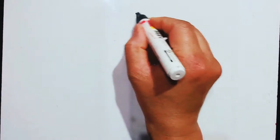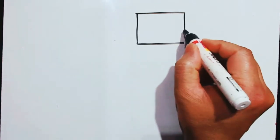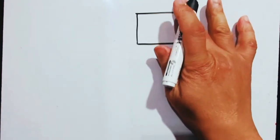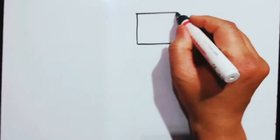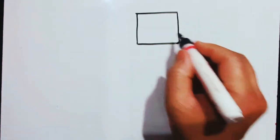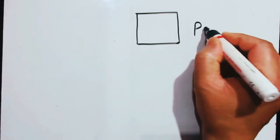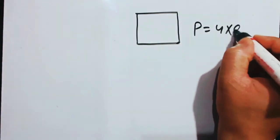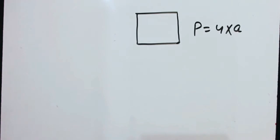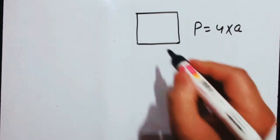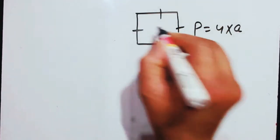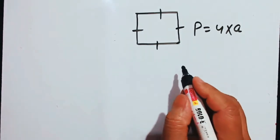Do you remember the perimeter of a square? The perimeter means the sum of all the sides. If I draw the square, the perimeter equals 4 into side, which is 4a, because a plus a plus a plus a gives you 4a.